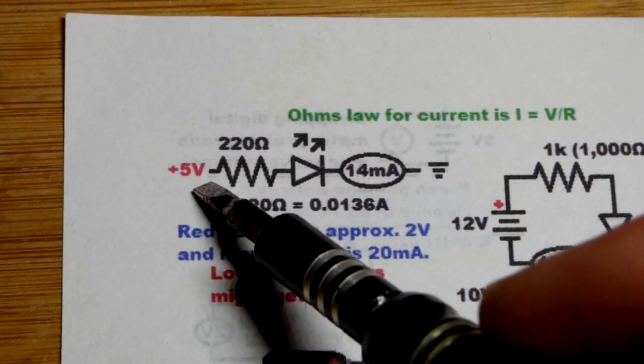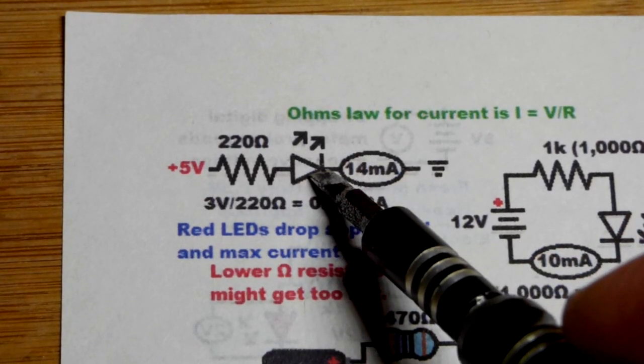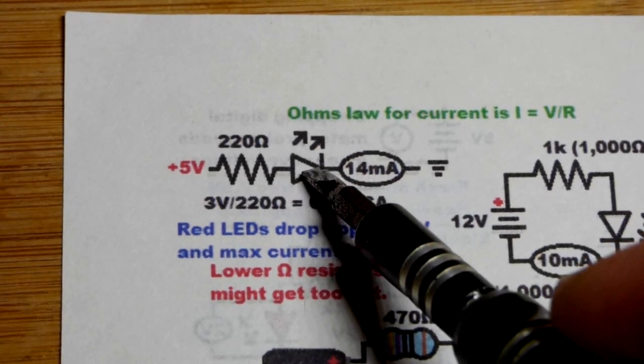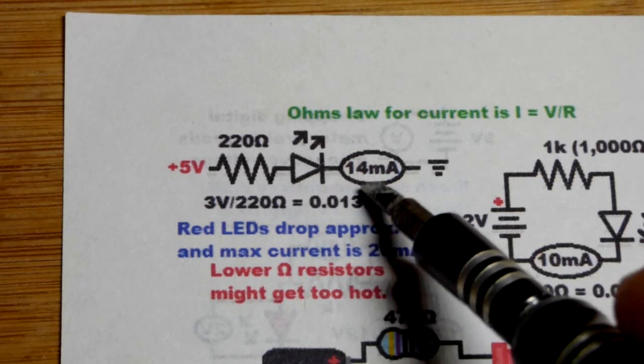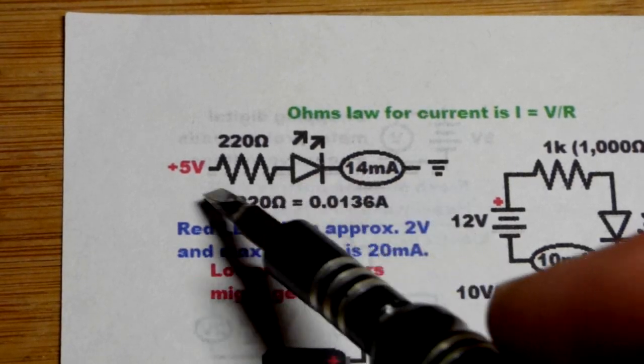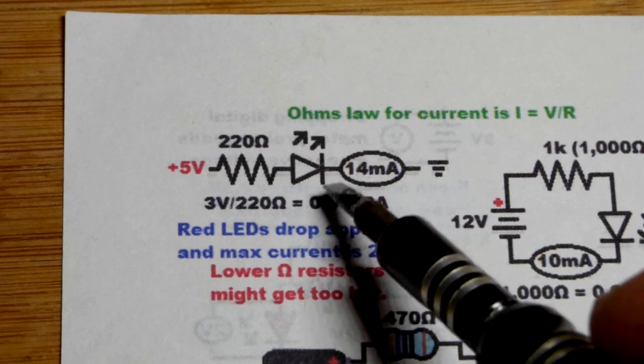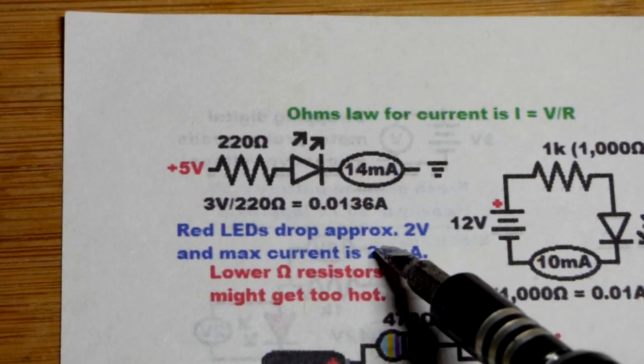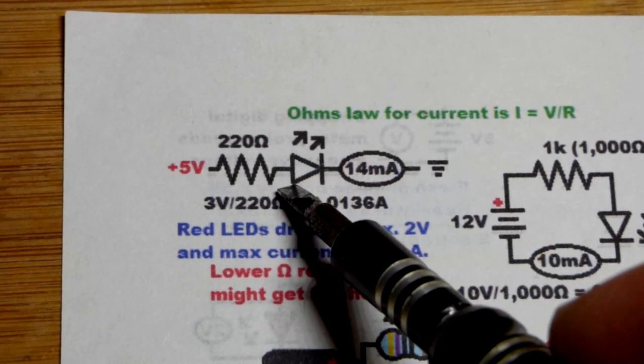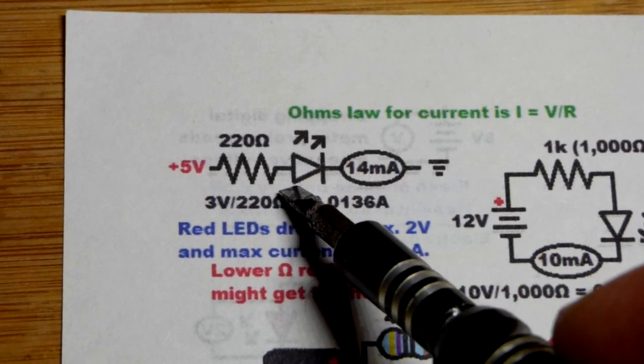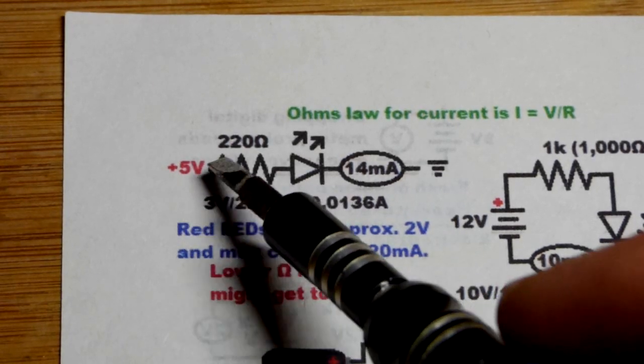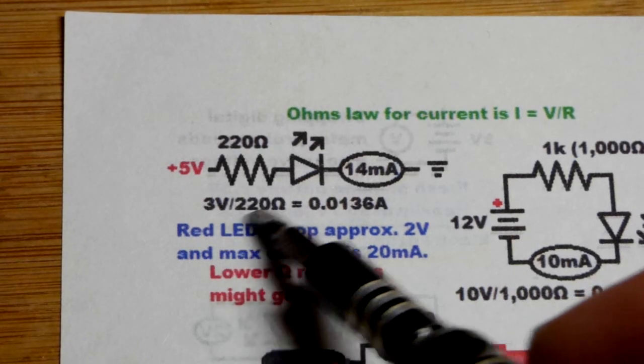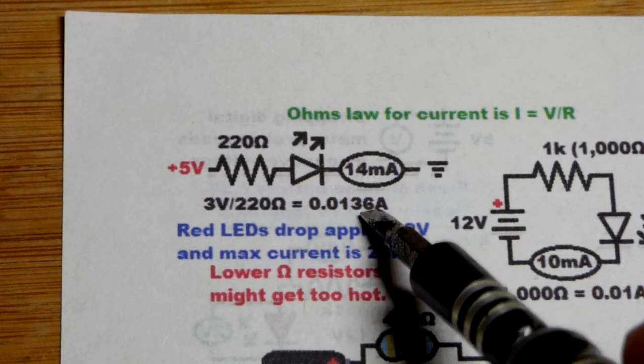So we have the 5 volts. The LED is going to drop about 2 volts out of that 5 volts. That's what's important to remember if it is a red LED. Blue LEDs actually drop 3 volts. There will be less current because there will be less voltage across the resistor, but the blue LEDs are still brighter at the same current. We dropped about 2 volts out of that 5. That's for the resistor to deal with. So that gives us 3 volts left right there, 3 divided by 220 ohms.